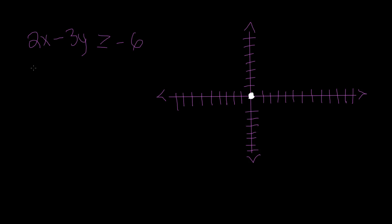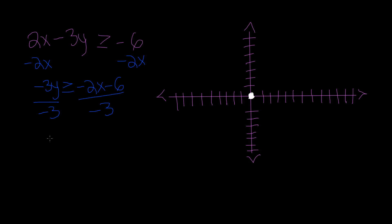So let's solve for y. We need to eliminate the 2x, and we get negative 3y is greater than or equal to negative 2x minus 6. Now divide by negative 3 on both sides. Remember, you have to divide by negative 3 to both individual terms, which are negative 2x and negative 6. Negative 2x divided by negative 3 gives us two-thirds x, and negative 6 divided by negative 3 gives us positive 2. So now we have y is greater than or equal to two-thirds x plus 2 — that's essentially y equals mx plus b form, except with an inequality symbol.